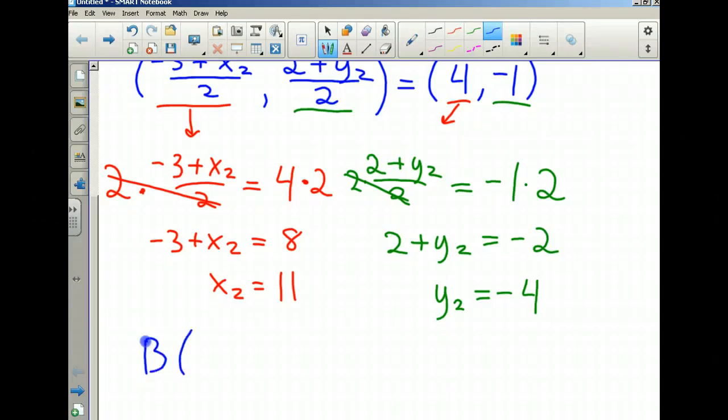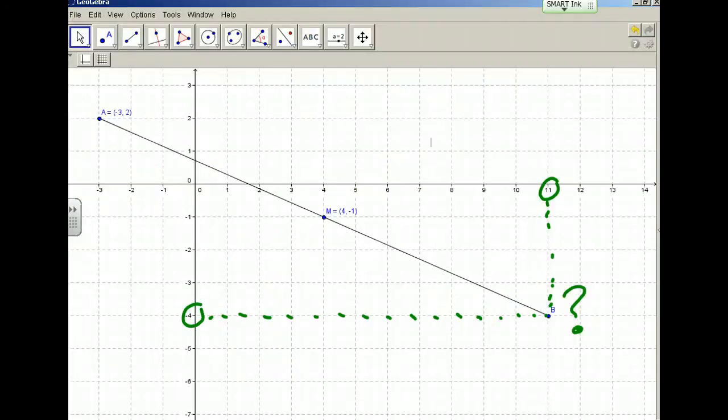This tells me that the coordinates of B, the other endpoint of segment AB with midpoint M, is (11, -4). If you remember when we were looking at the GeoGebra drawing, we said B would be (11, -4), and we've just seen how you can solve that algebraically.